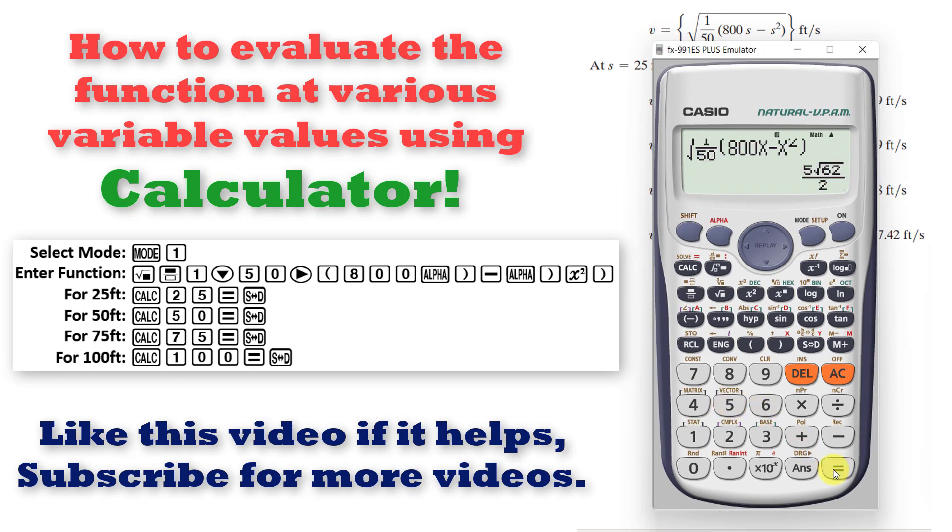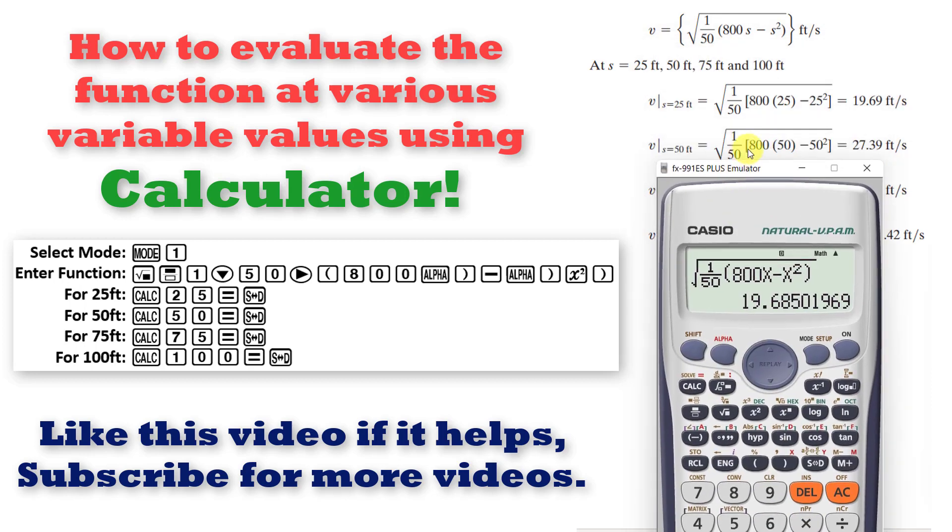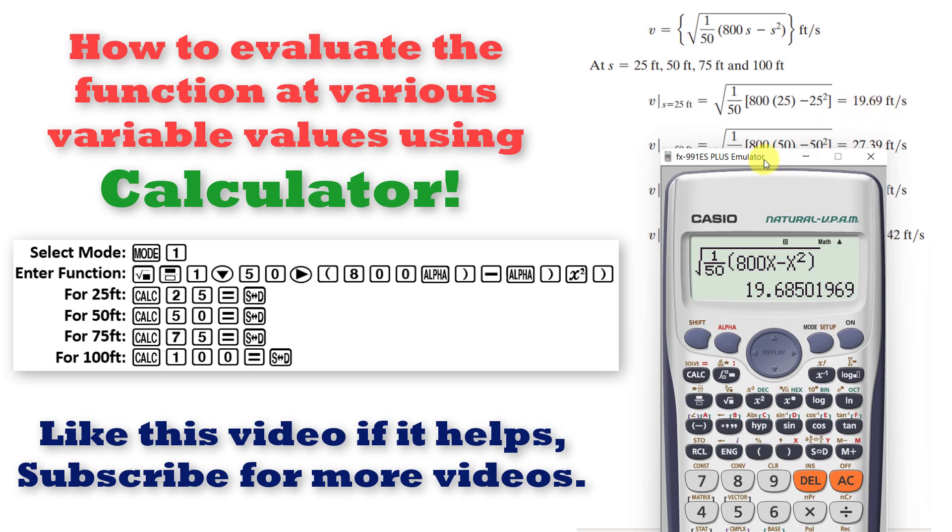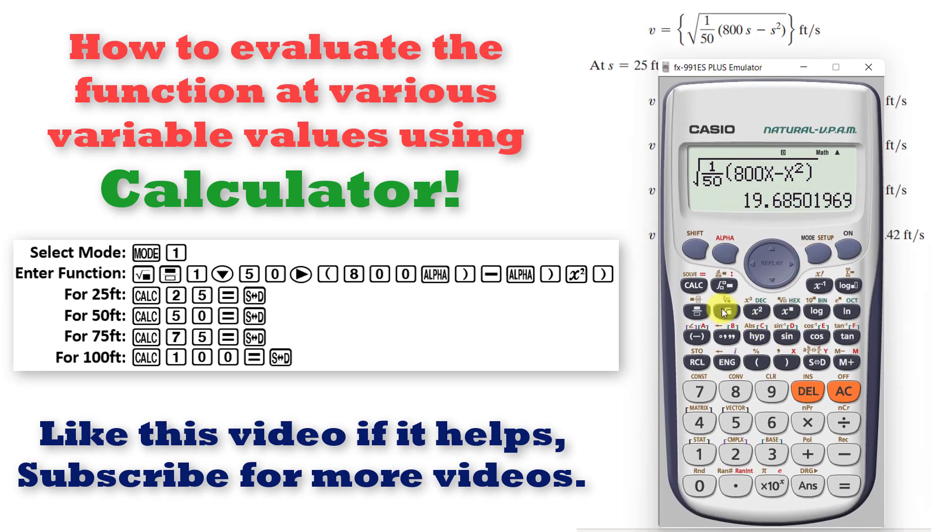So for 25 equal the value is 19.685 which is 19.69. Similarly press calculate again.